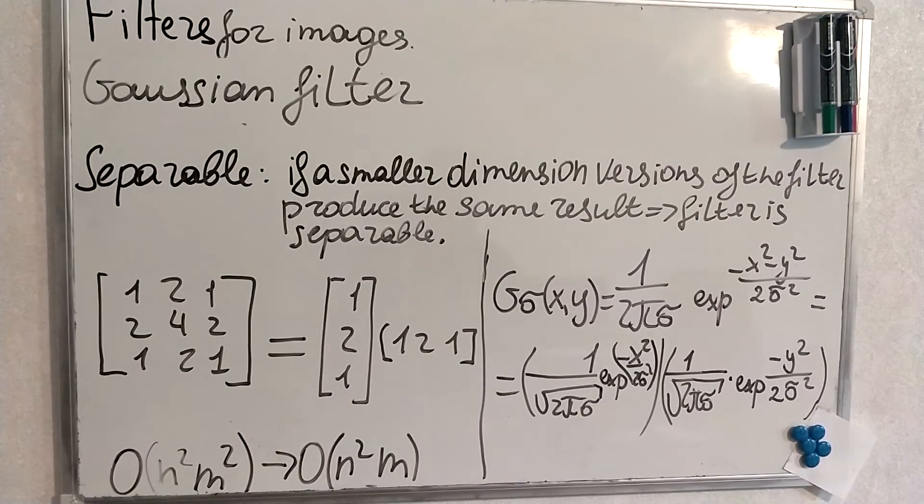Among the advantages of the Gaussian filter there are it's simple, sigma can be tuned, Gaussian filter preserves edges and gives more weight to the pixels than for their neighborhood.